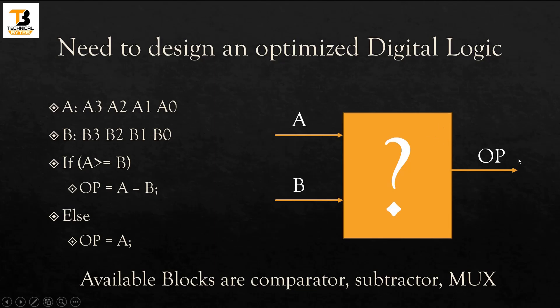While designing this logic, you can assume that comparator, subtractor, and multiplexer are already available, so you need not go into the gate level. You can use them like a ready-made block. But let me once again repeat that this logic should be the most optimized one. It should consume minimum area.